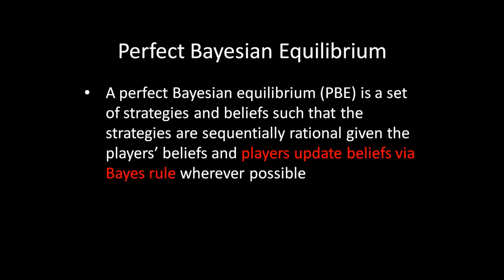There's a caveat: the 'wherever possible' part. There might be an action that is never taken in equilibrium, and this creates a problem for beliefs about being in a situation where that off-path strategy was pursued. Bayes' rule requires an outcome to occur with positive probability — otherwise there's a divide-by-zero error. So in these cases, we don't have a clear and straightforward way of calculating beliefs, and a large portion of this unit will address how we should think about beliefs in situations where we can't update them through Bayes' rule.